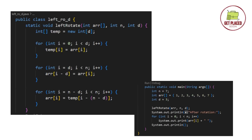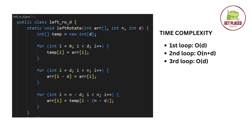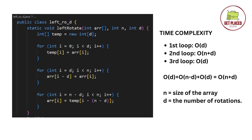In the main function, we just give the array input, size, and print the result. For time complexity, we use three loops: the first runs d times (O(d)), the second runs from d to n (O(n)), and the third runs from n minus d to n (O(d)), so altogether approximately O(n + d). For space complexity, we create a temporary array of size d to store the first d elements, so space complexity is O(d).